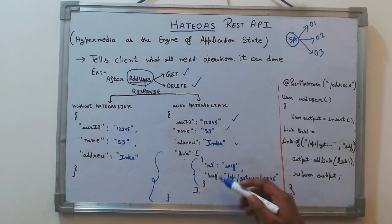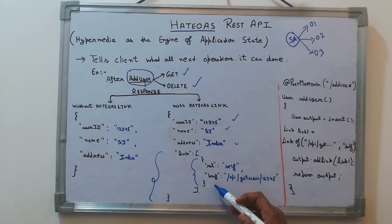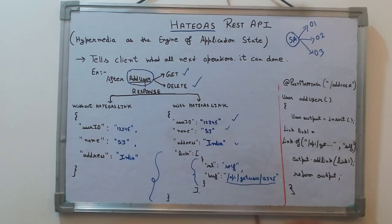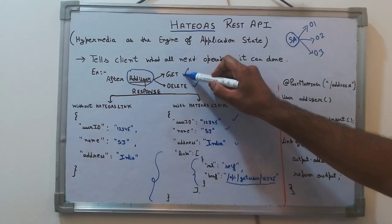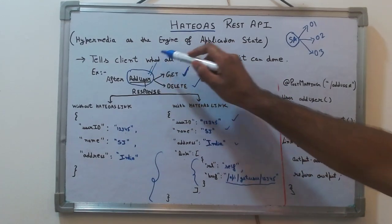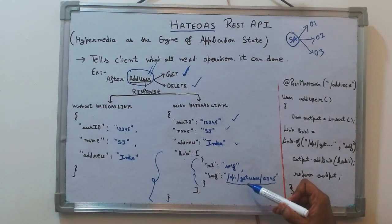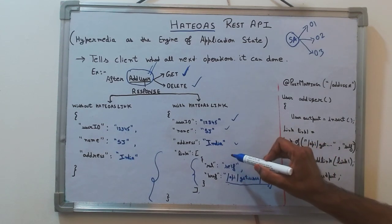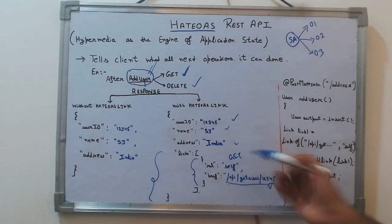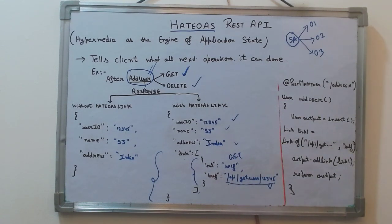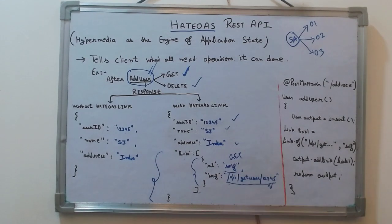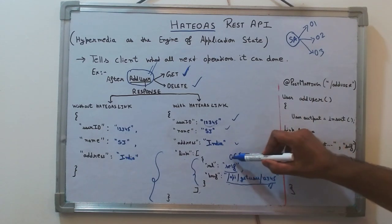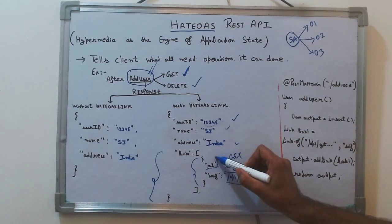Each link object has two things: 'rel' (relation) and 'href'. The href is a unique URI for the operation — for example, after addition, you can do a GET, so I add a URI like '/api/getUser/12345'. The relation 'self' is an industry de facto standard meaning it's a GET — you are trying to fetch the details of this user.